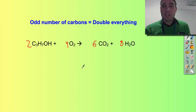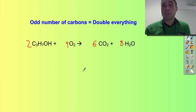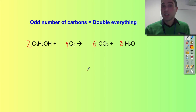So there are a couple of rules to help you when you're balancing alkanes and alcohols that are completely combusting with oxygen, only producing carbon dioxide and water as byproducts. That's Flipping Science for today. See ya.